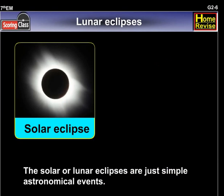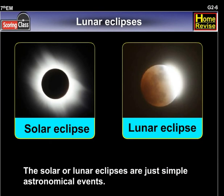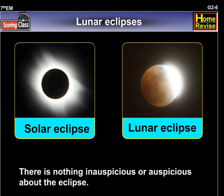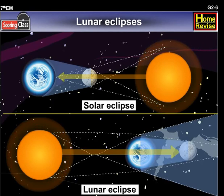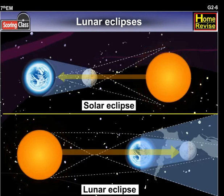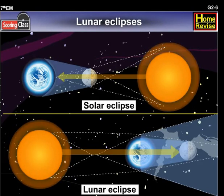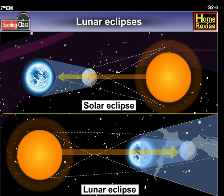Solar or lunar eclipses are just simple astronomical events. There is nothing inauspicious or auspicious about the eclipse. It is only a result of the sun, moon and the earth falling into a particular position. These positions do not occur frequently and hence they arouse some curiosity in the minds of the people.